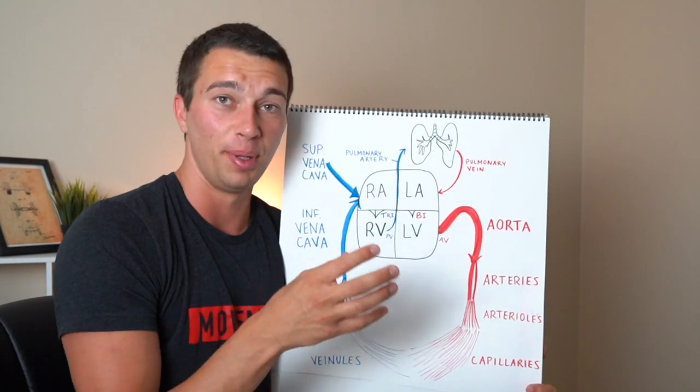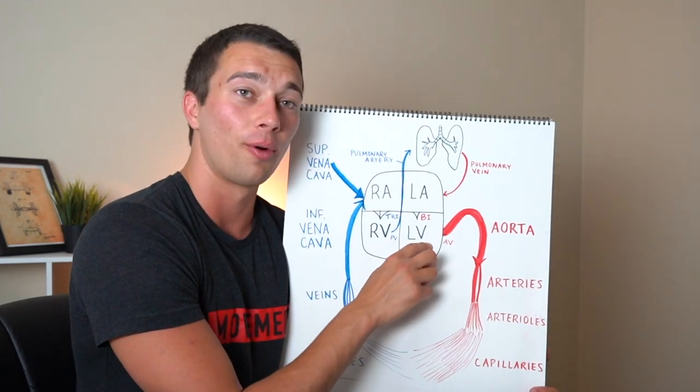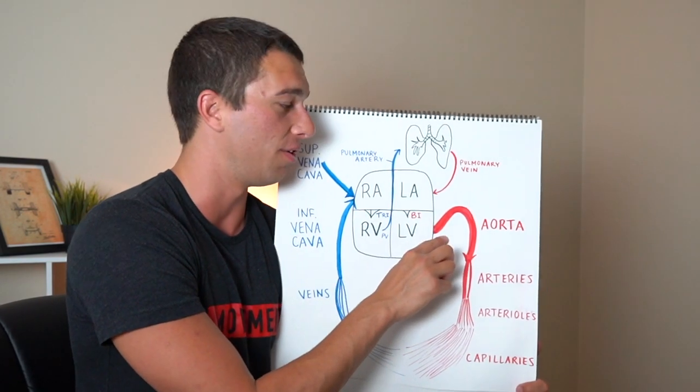The aorta, big and thick as well, is our biggest artery and how are we going to get from the left ventricle to the aorta? Through the aortic valve.